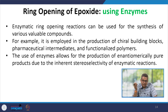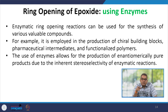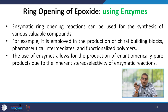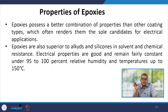Enzymatic ring opening reactions can be used for the synthesis of various valuable compounds, for example in the production of chiral building blocks, pharmaceutical intermediates and functionalized polymers. The use of enzymes allows the production of geometrically pure products due to the inherent stereo selectivity of enzymatic reactions.